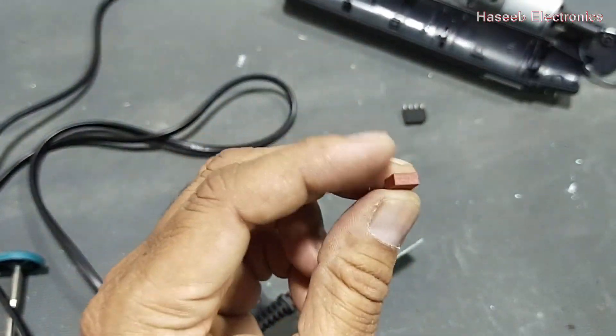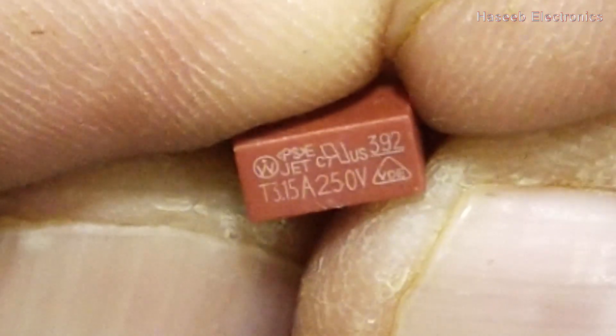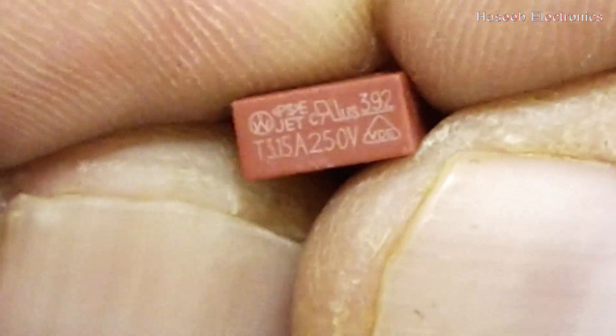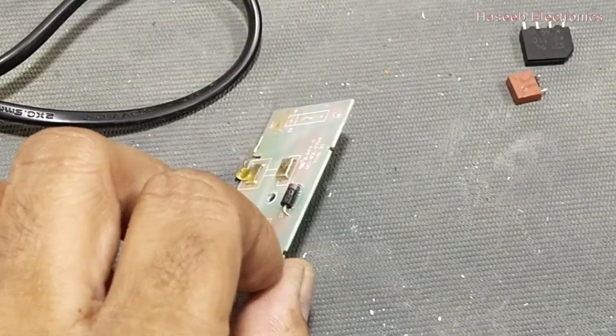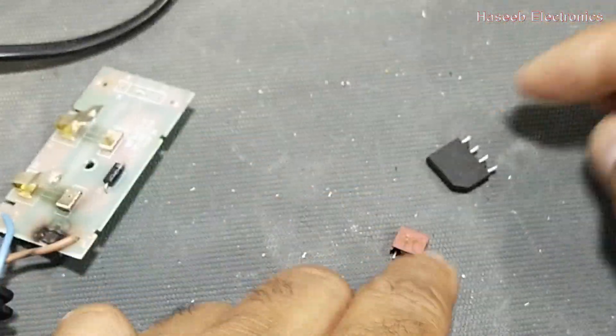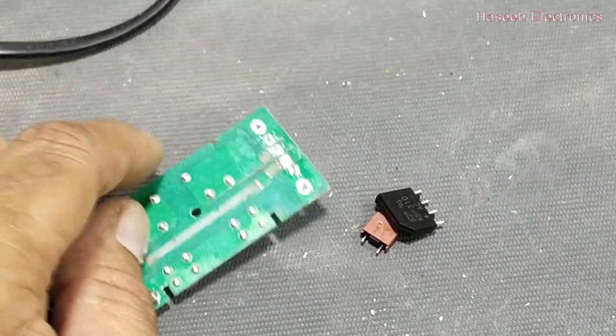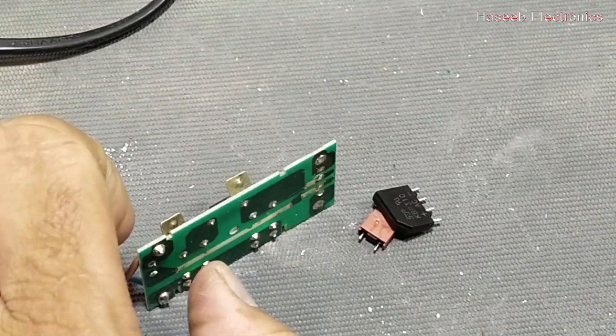Now I am removing the fuse. So this fuse is 3.15 ampere, 250 volt. So these two components are now bad, we will replace these two and we will repair the track and then we will check what is the condition.